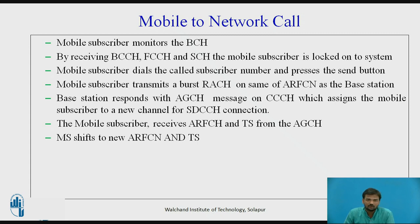The mobile subscriber first dials the called subscriber number and presses the send button on the GSM mobile phone. The mobile subscriber transmits a burst of RACH data on the same ARFCN (Absolute Radio Frequency Channel Number) as the base station. The base station responds with an AGCH (Access Grant Channel) message on the CCH (Common Control Channel), which assigns the mobile subscriber to a new channel for SDCCH (Standalone Dedicated Control Channel). The mobile subscriber receives its ARFCN and time slot assignment from the AGCH on TS0 of BCH.